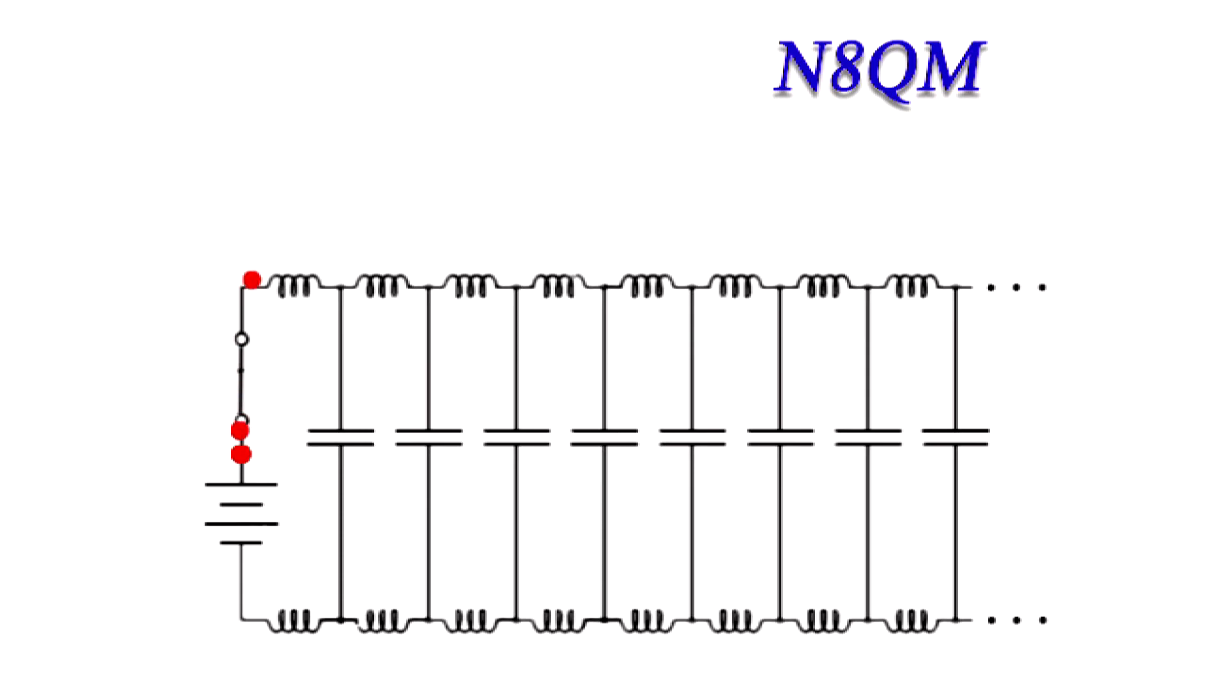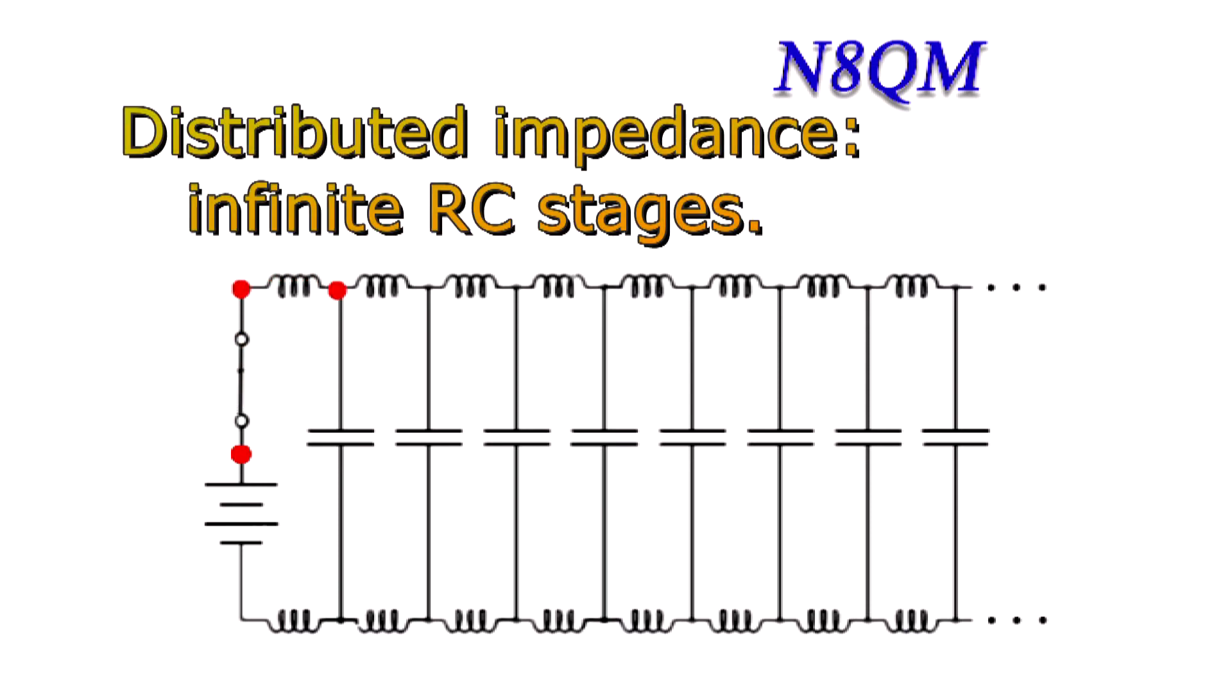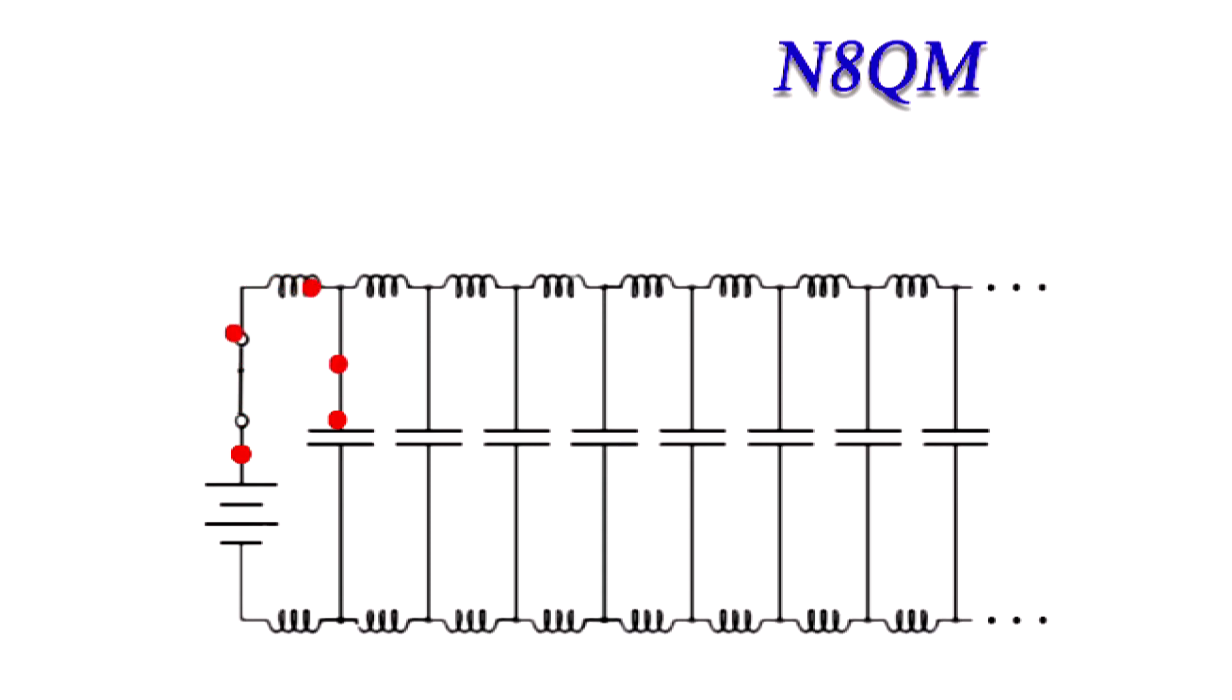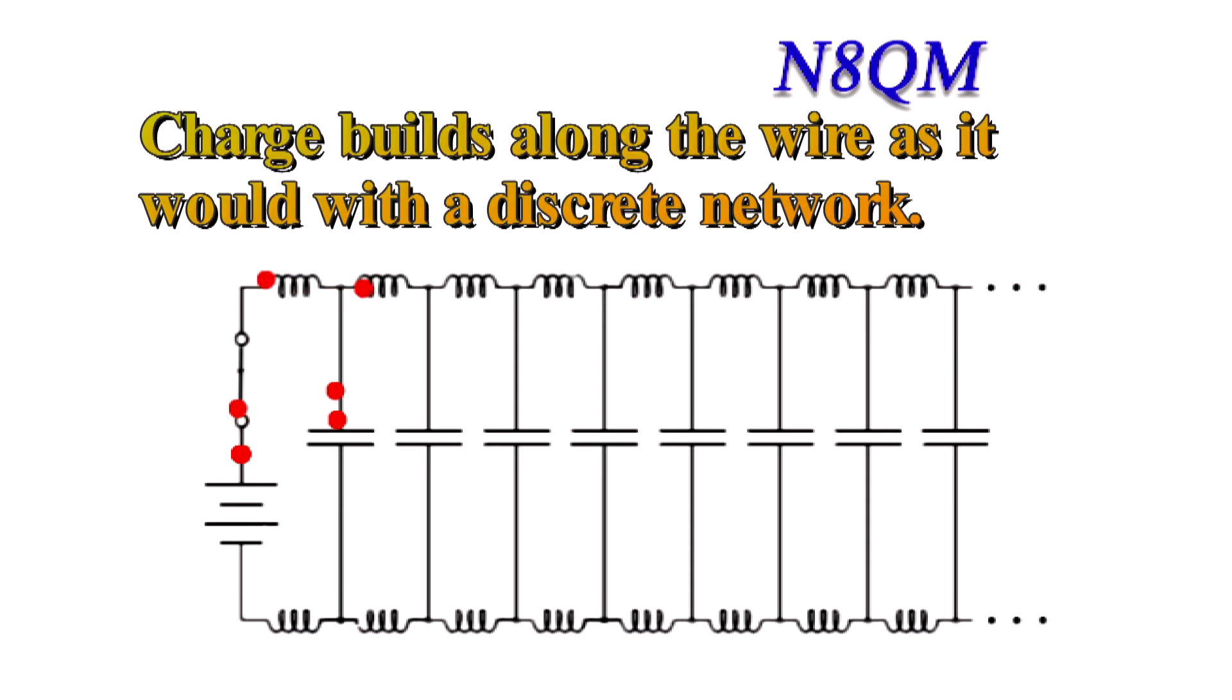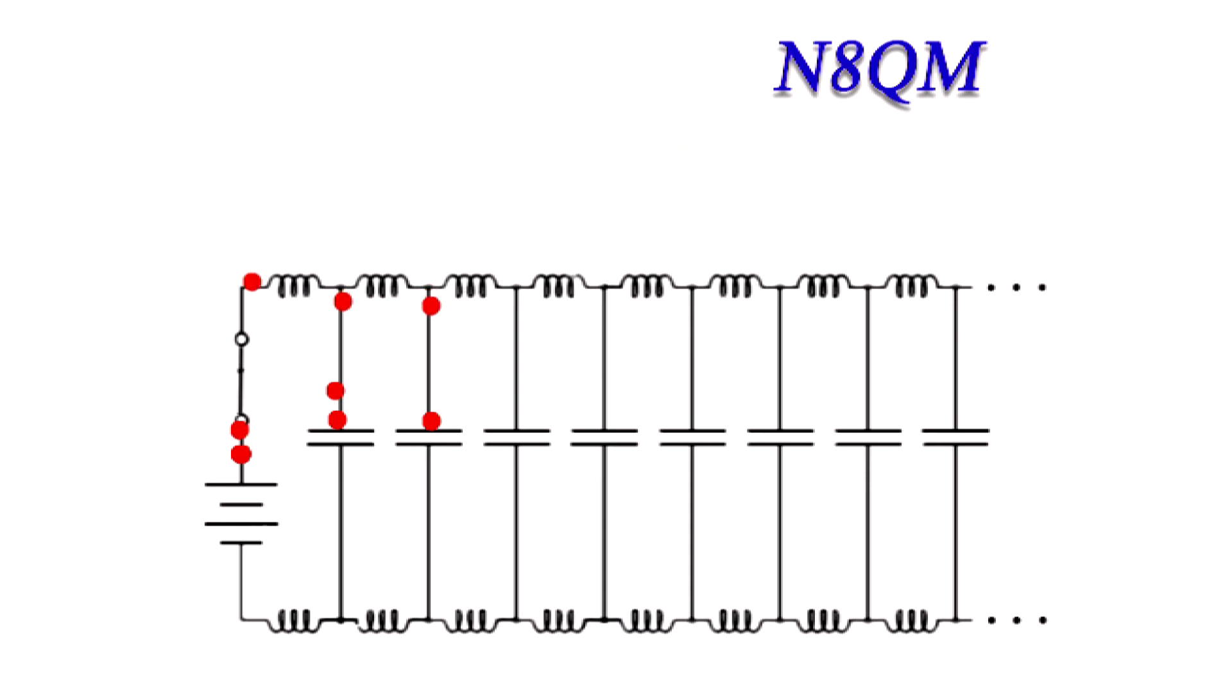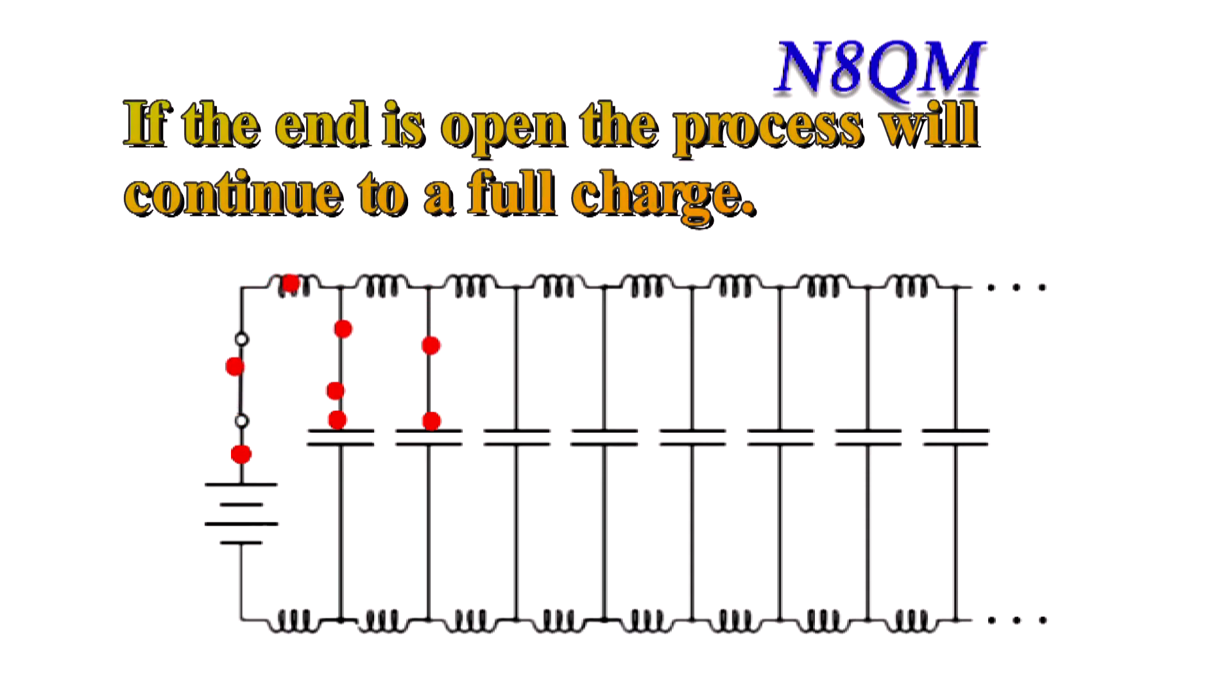Any wire has a distributed reactive impedance, an infinite number of LC stages through its entire length. With the switch closed, electrons begin to flow into the infinite LC network. This is no different than it would be for any discrete LC network.